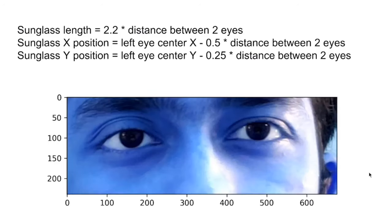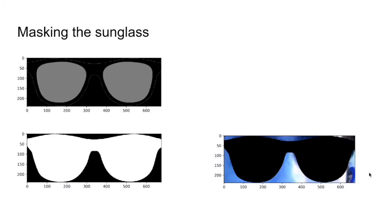Then we scale down our sunglass image to 2.2 times the distance between the two eyes. We also set the x and y position of the sunglass based on these two formulas given here. Then we crop the part of the image we want to put the sunglass, and then we mask our sunglass, which means we narrow down the pixels we want to keep and the pixels we don't want to keep from the sunglass.